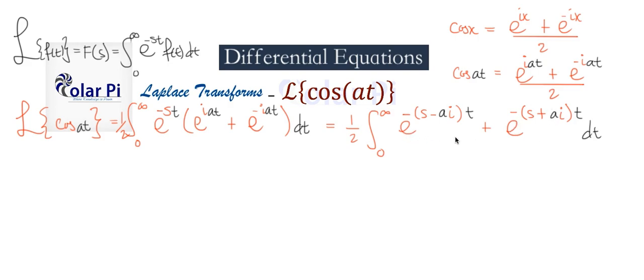Notice that in this part, since we're integrating with respect to dt, this here is just a constant, the negative of s minus ai. We are integrating with respect to dt. And similarly, in this part, this is a constant, what's multiplying t and the exponent of e.